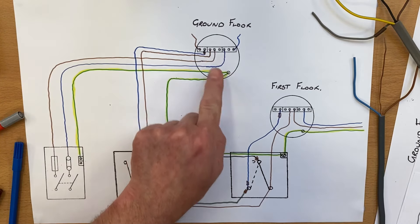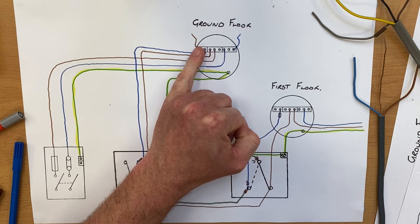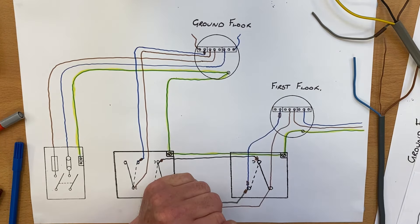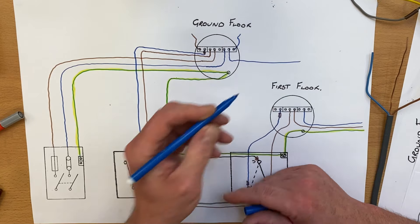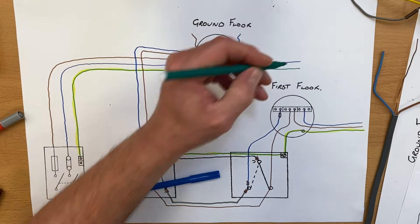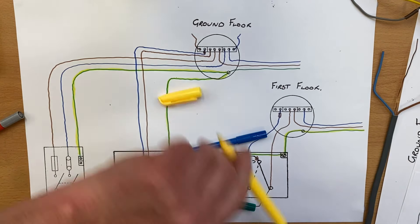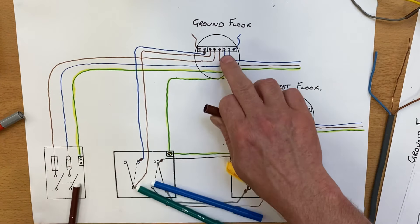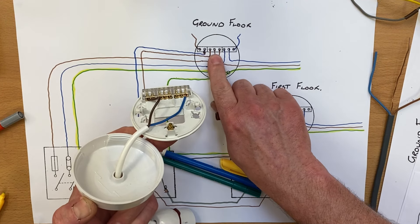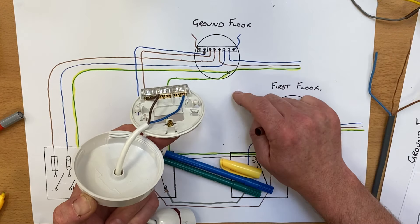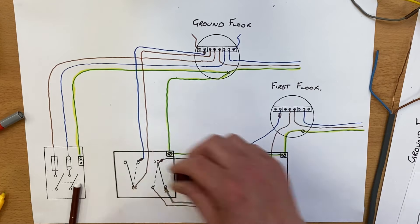So here's what we've got: a permanent line comes in, loops through, and comes down to common. When we operate that switch we turn on the lighting point, because it has a switching line on one side and a neutral on the other. If you want to carry the circuit on to another room — maybe a kitchen or dining room — a twin-and-CPC cable takes out the neutral, CPC, and line conductor to continue the system to another area.